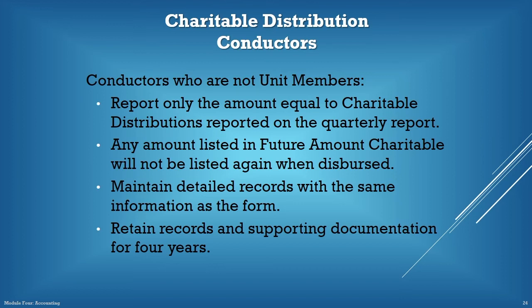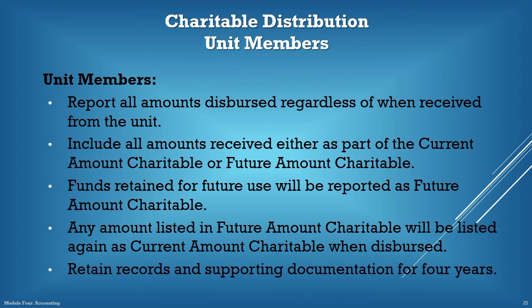Reporting requirements for the charitable distributions detail form are different for conductors who are not unit members. For conductors who are not part of a unit, the distributions detail must match the quarterly report total for charitable distributions. For amounts identified for future use, keep detailed records with the date, name of recipient, and check number. Keep these records with supporting documentation for four years. For unit members, the total distributions must include all distributions made during the quarter, regardless of when the funds were received from the unit. The report should include all amounts received from the unit as part of the current amount charitable, future amount charitable, or a combination of the two. When funds originally identified as future use are dispersed, they will be reported on the form. Remember, regardless of whether organizations are unit members or not, these records will be requested as part of an audit.